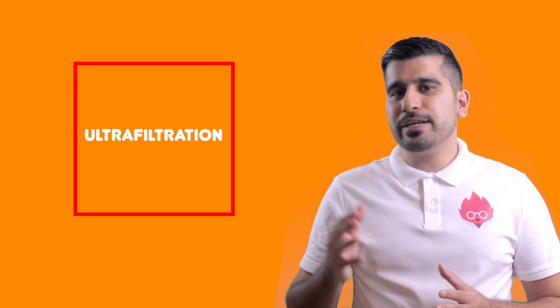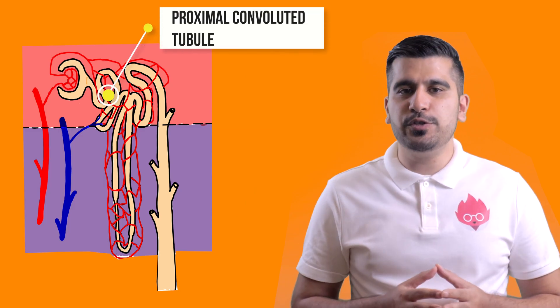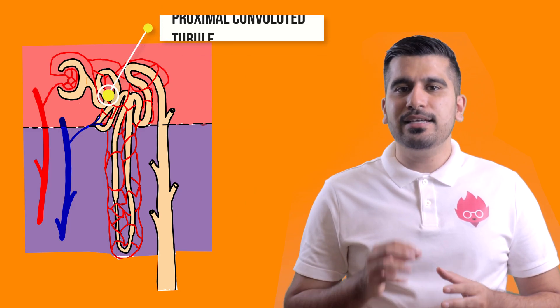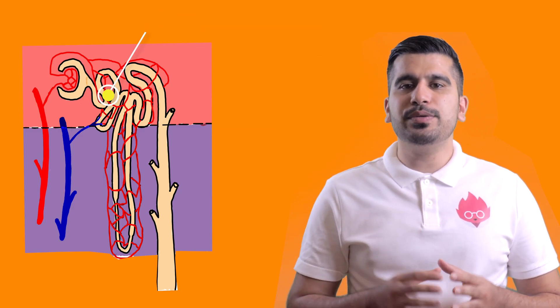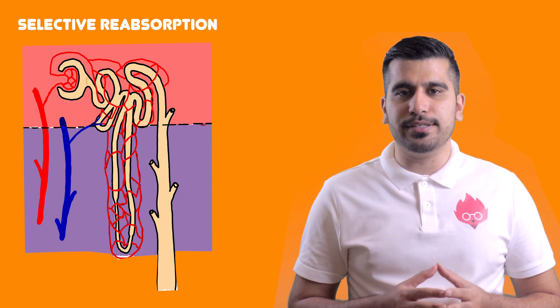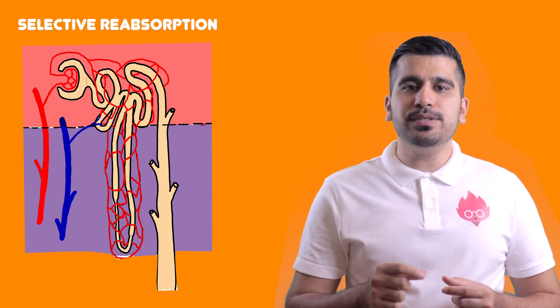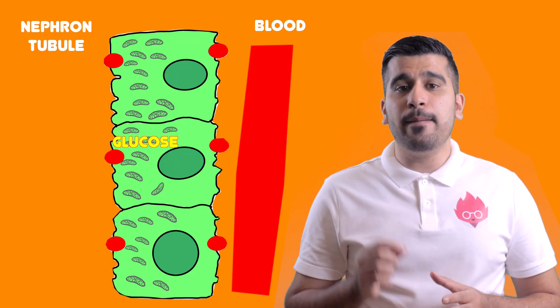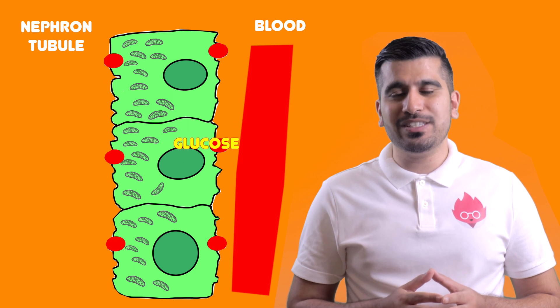The filtrate will then move towards the proximal convoluted tubule. Here, a process known as selective reabsorption occurs. Glucose is selectively reabsorbed by active transport.